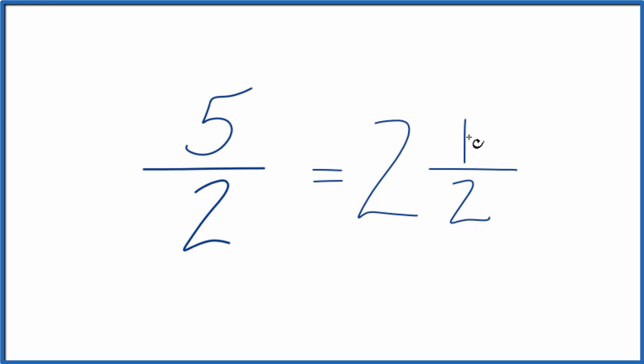2 times 2 is 4, plus 1 is 5, so 5 over 2. You can check your work.